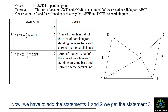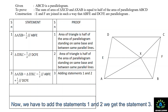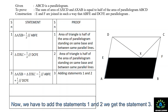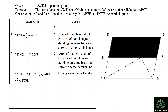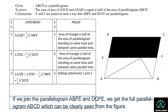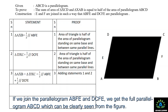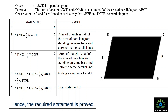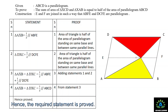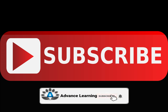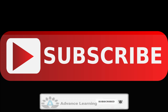Adding statements 1 and 2: Area of triangle AXB plus area of triangle DXC equals half of parallelogram ABFE plus half of parallelogram DCFE. Since parallelogram ABFE and parallelogram DCFE together make up parallelogram ABCD, this equals half of parallelogram ABCD. This completes the proof.